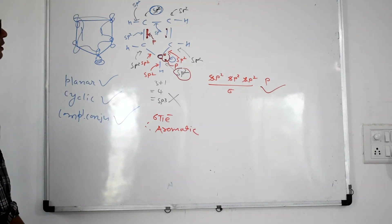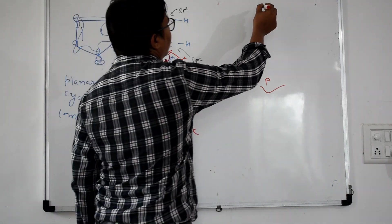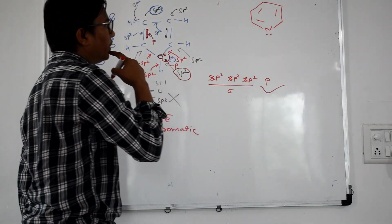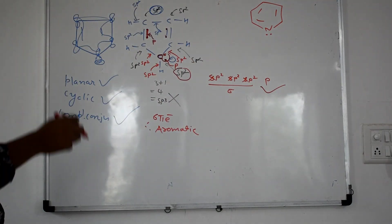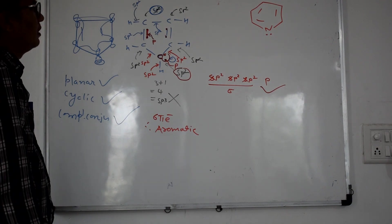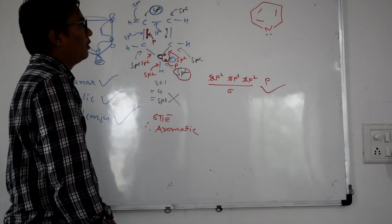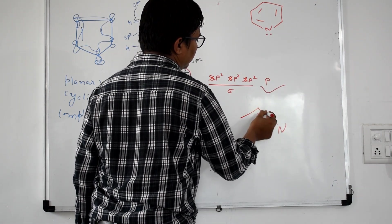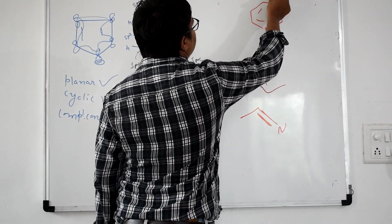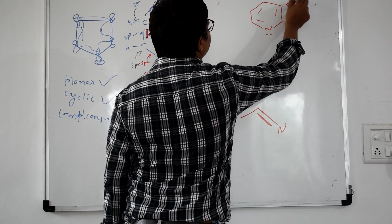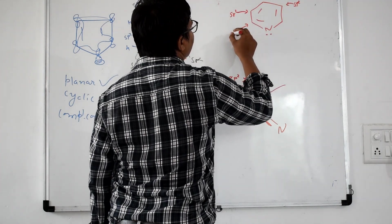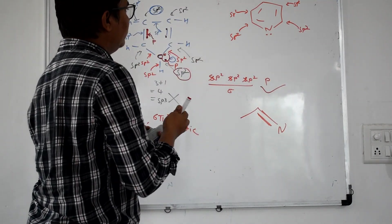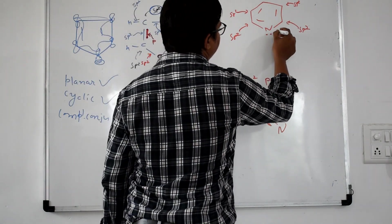Let us consider another example — pyridine. It has one lone pair of electrons on nitrogen. Checking the hybridization of every atom: nitrogen is directly attached to a double bond, so it is sp2. This carbon is sp2, this is sp2, this is sp2, and this is also sp2 hybridized.